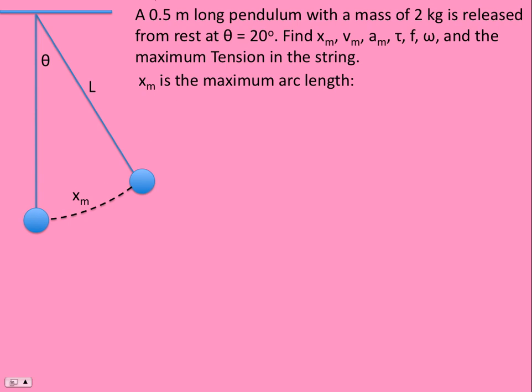It's what fraction of the total circumference. Imagine this pendulum going around in a circle, so the circumference would be 2πL, and then the fraction would be 20 degrees over 360 degrees, so the amplitude is 0.175 meters.